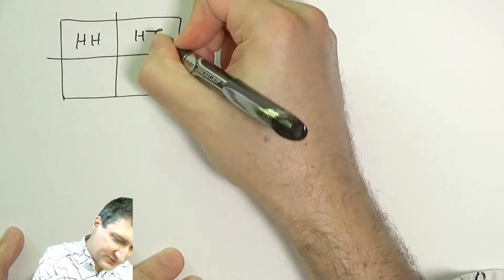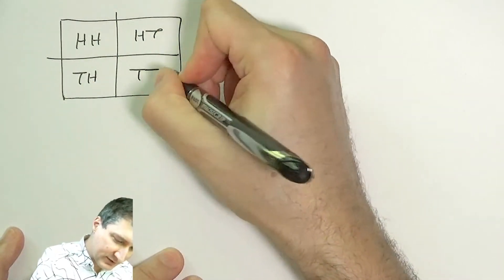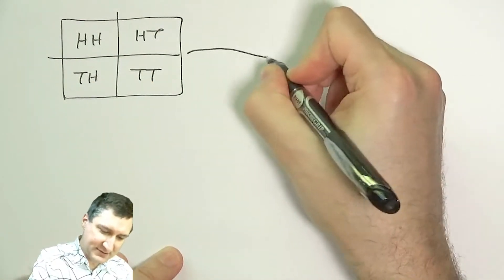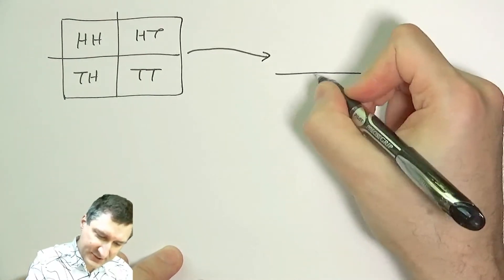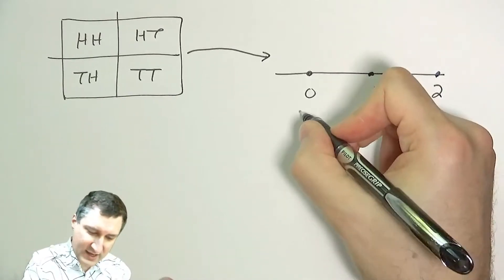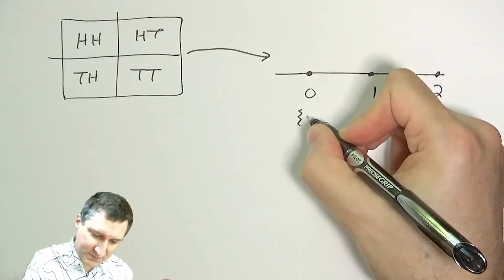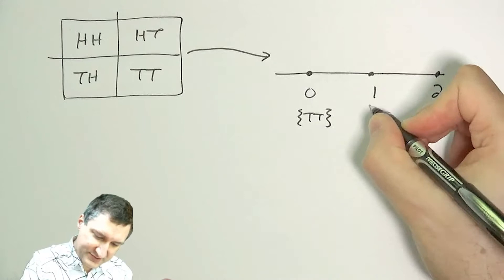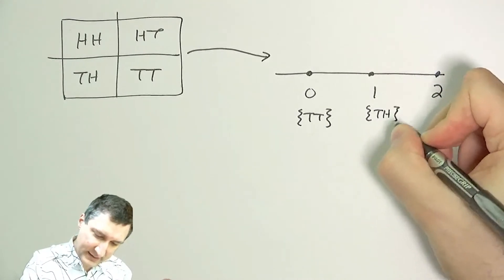And that gets mapped via this function to a set of numbers, a set of discrete numbers. And each of these numbers corresponds to some of the outcomes.